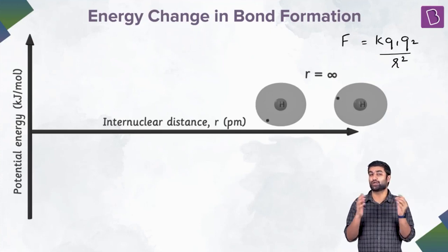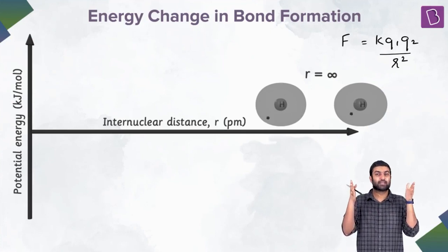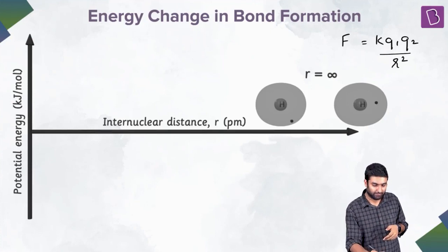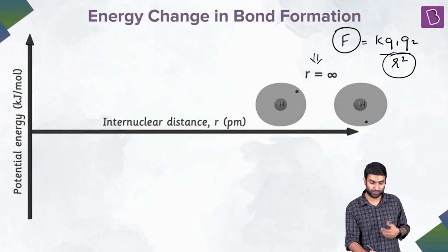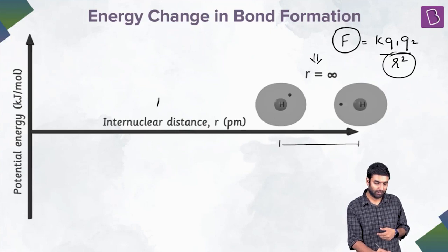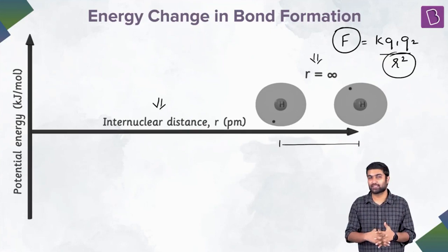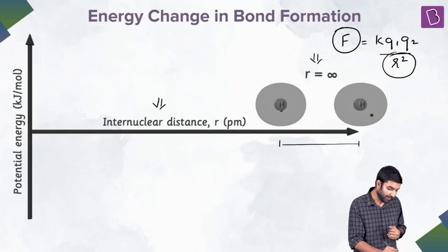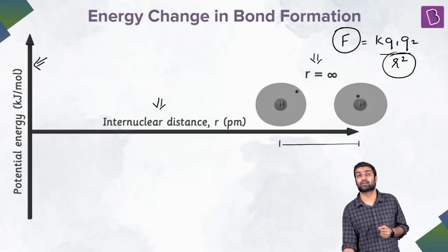So theoretically, if force is zero, then r has to be theoretically infinity. That is why we have r listed as infinity here. By r, I mean the inter-nuclear distance. On the y-axis we have potential energy; on the x-axis we have inter-nuclear distance.